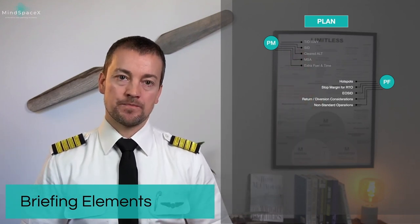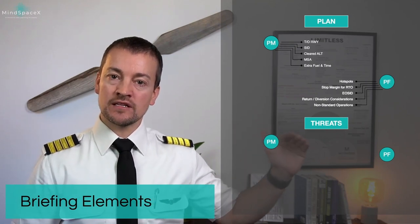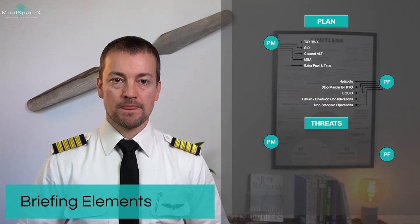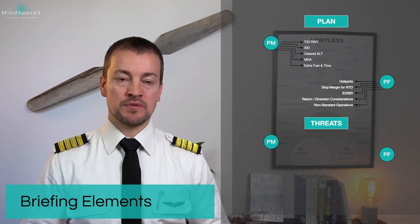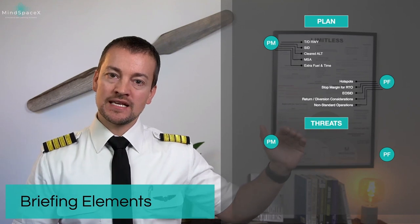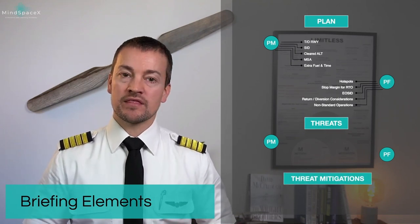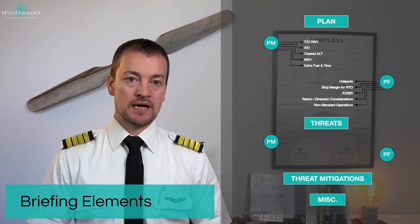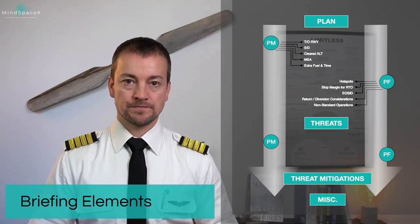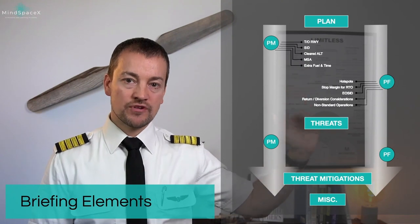The second element of the briefing is threat and error management. Again, it's the pilot monitoring initiating the threats part of the briefing, talking about the threats he or she sees as potential to this particular flight. After the PM states the threats, the pilot flying will then state his or her input, and together they will talk about the threat mitigation. The final part of the briefing covers any miscellaneous items particularly important to this departure. Remember: PM initiates the briefing and the pilot flying complements — both for the planned part, the threat part, and the mitigation.